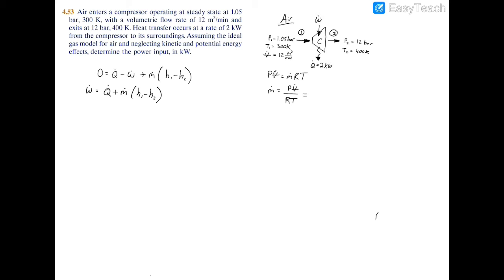So I'm going to plug in the pressure, volumetric flow rate, gas constant, and temperature from the left side. We have 1.05 bar, which is 105 kilopascals. Multiply by 100, you definitely need to make sure you're in kilopascals. Then multiply by that volumetric flow rate, 12 meters cubed per minute. We need it in meters cubed per second, so divide by 60. Then divide by the gas constant, which is the universal gas constant divided by the molar mass. For air, you have 8.3143 divided by 28.93.